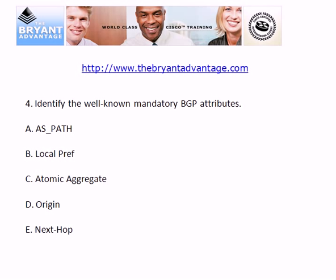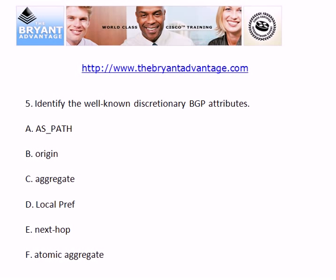For question 4, the well-known mandatory BGP attributes are AS path, origin, and next hop — so A, D, and E. As for the well-known discretionary BGP attributes, those are local preference and atomic aggregate.